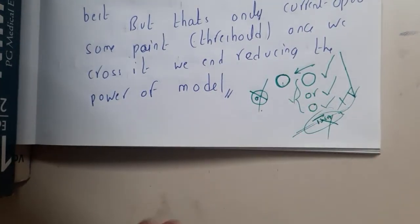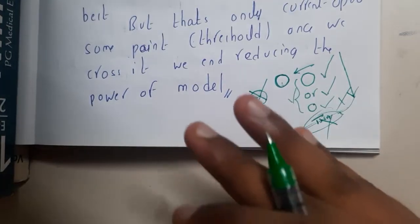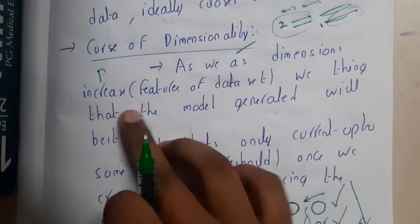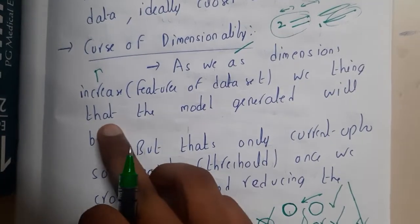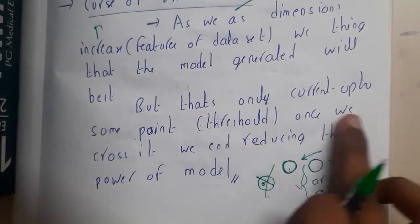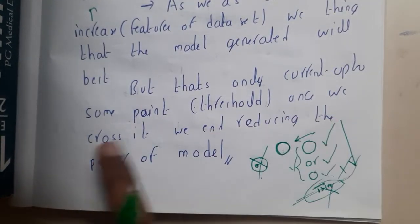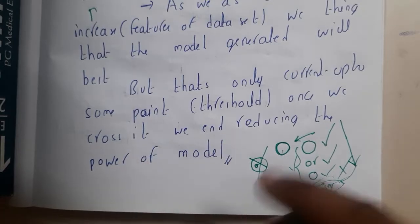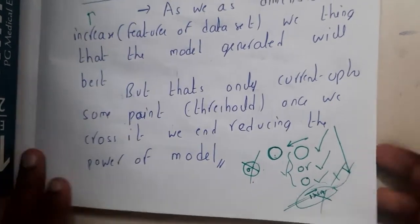You should build a threshold, and once you reach it, you should stop increasing dimensions. As dimensions increase, the features of the dataset increase and we think the model will be best — but that is only correct up to a certain threshold. Once we cross it, we actually reduce the power of the model.